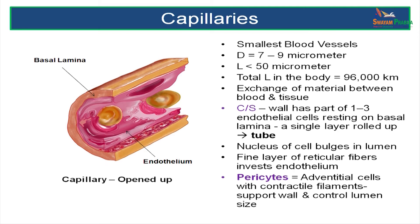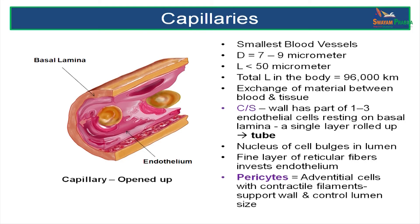Capillaries are the smallest blood vessels, having a diameter of 7 to 9 micrometers and a length of less than 50 micrometers. If you take all the capillaries in the body, they can cover a distance of about 96,000 kilometers. They are so thin that exchange of nutrients and oxygen can take place across their wall. A capillary is a tube formed by a single layer of endothelial cells resting on a basal lamina. It may have some cells called pericytes — contractile cells which can control the luminal size.